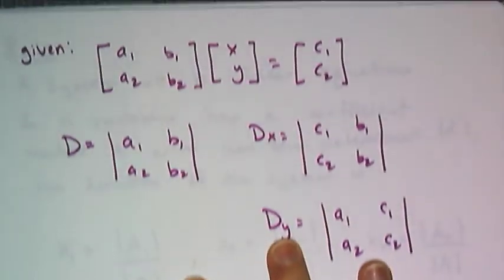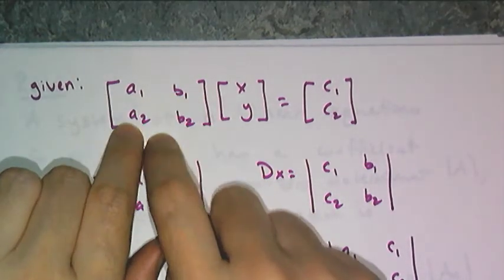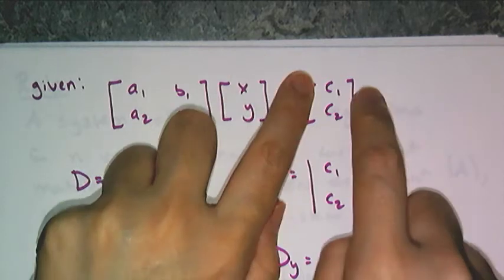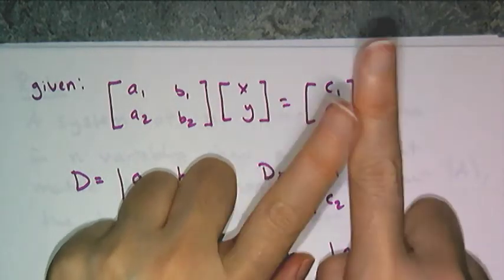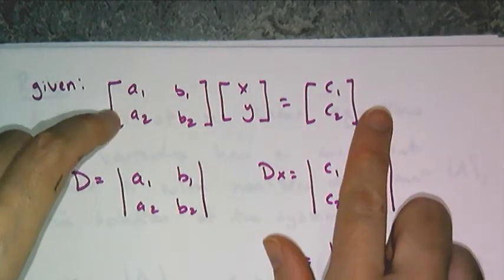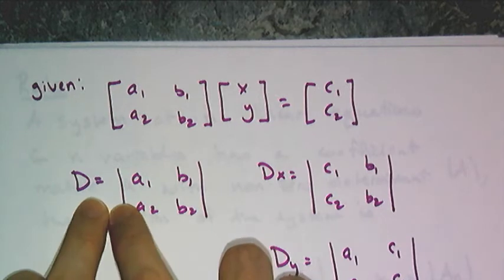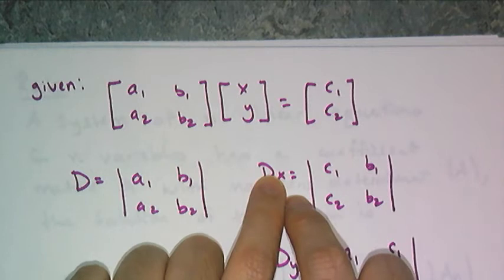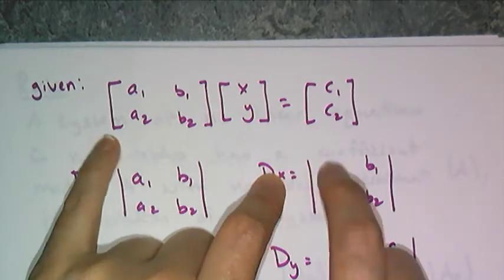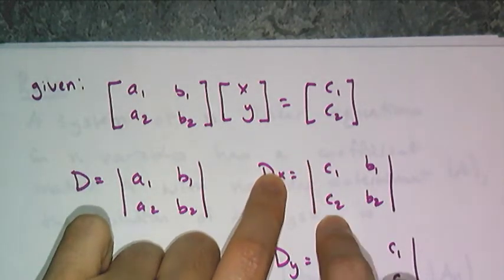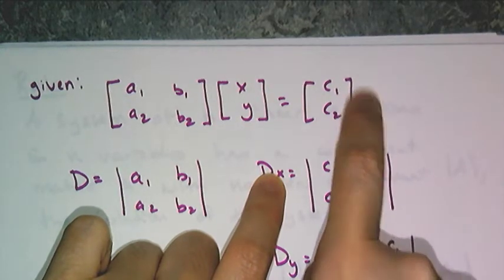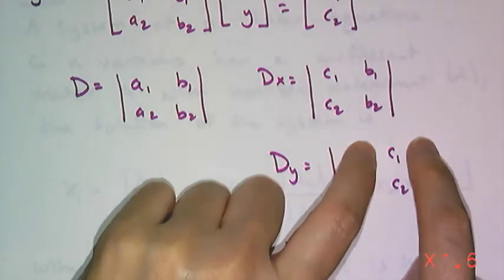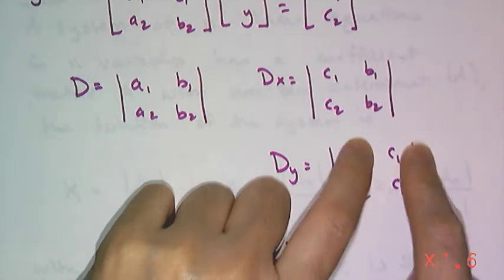So if you're given some system, a1, b1, a2, b2 coefficient matrices, x and y things you're solving for, c1 and c2 the constants in those equations. If I define d as the determinant of the coefficient matrix, d sub x as that coefficient matrix with the x coefficients replaced with c1 and c2 the constants, and d sub y, I do the same thing, I replace the coefficients of the y's with c1 and c2.